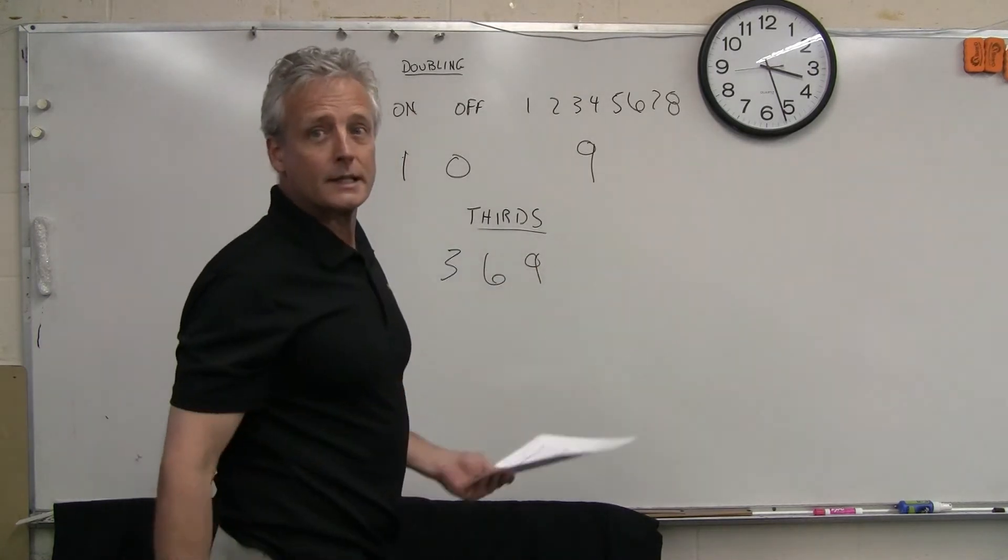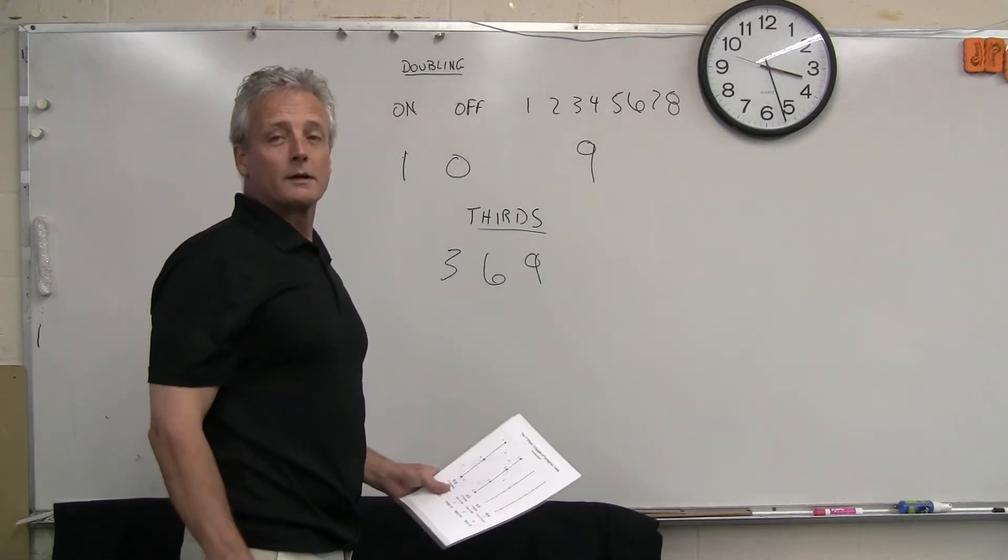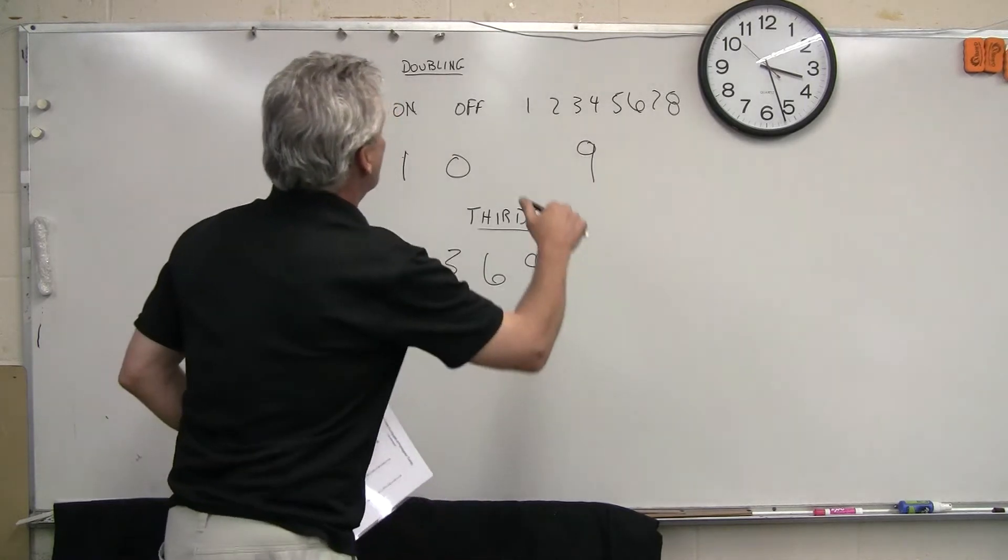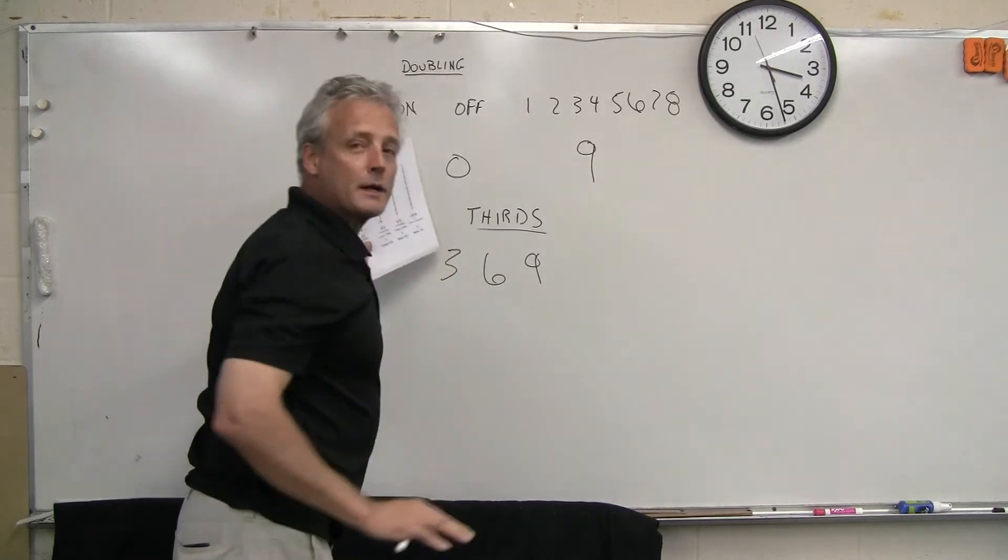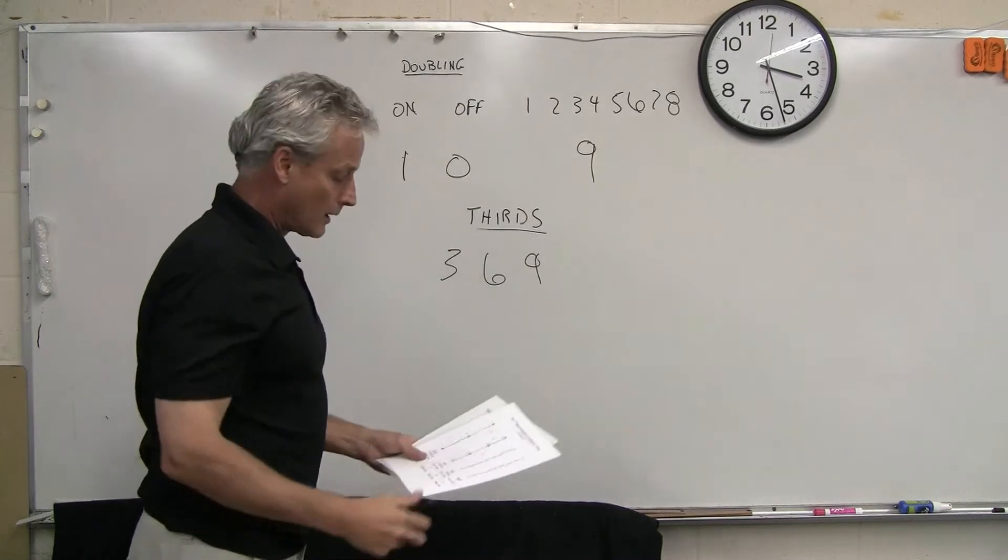According to Marco Roden and also Nikola Tesla, if you understand the importance of the three, six, and the nine, you have the key to the universe. Now, the three, six, and the nine are all incorporated in here, but they're using the doubling that we already know about. We just need to expand it into understanding what the thirds are.